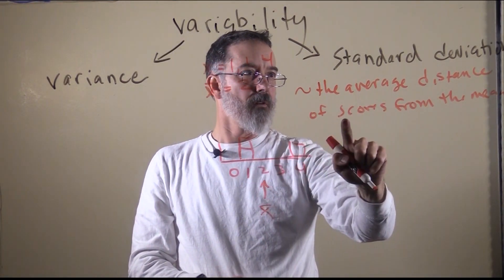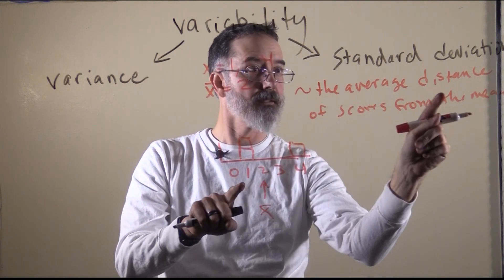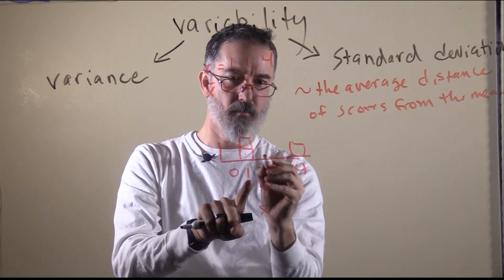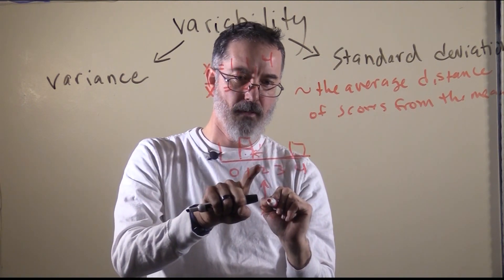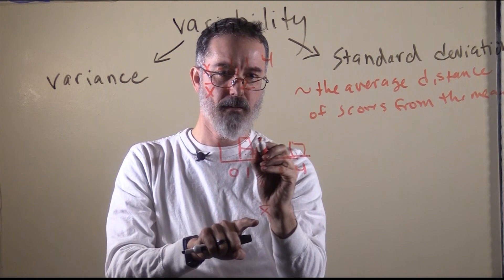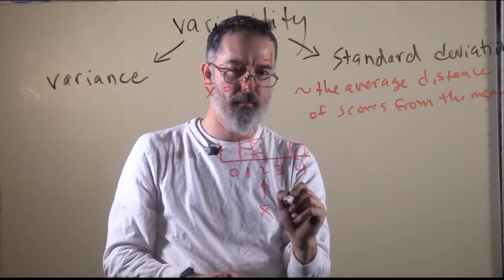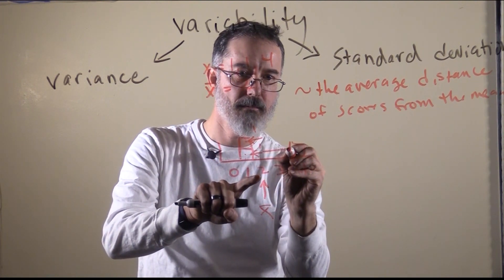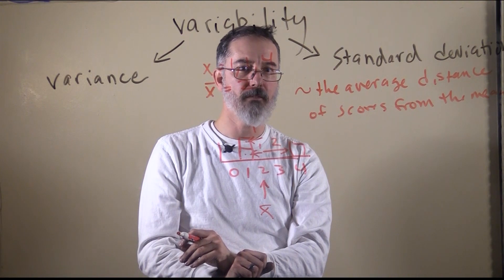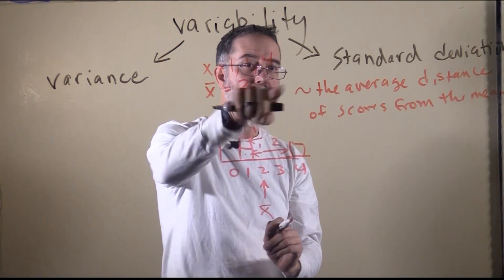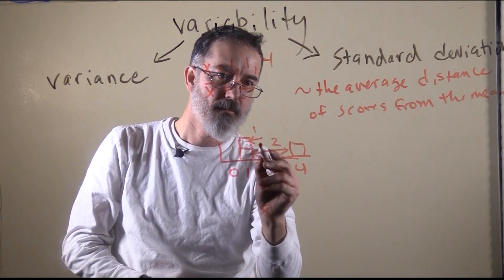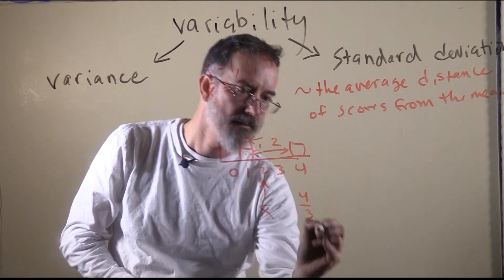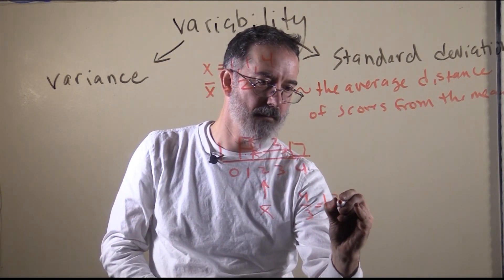The average distance of scores from the mean: a distance score is how far a score is from the mean. The mean is 2, and this score is 1, so it is 1 away. This score is also 1 away from the mean, and the score of 4 is 2 away from the mean. So the distance scores are 1, 1, and 2. The average of those: 1 plus 1 is 2, plus 2 is 4, divided by 3 scores — the average distance would be 1.33.